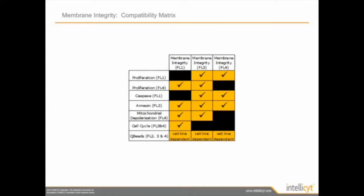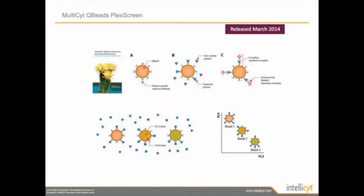You can also multiplex this dye with cell cycle and even with other Q-Beats. One of our most popular kits is the Q-Beats assay kit, which allows you to look at secreted cytokines. The beads are coated with a capture antibody that will capture the secreted protein. Then you come in with a fluorescently labeled detection antibody to measure how much protein has been captured. The beads are barcoded with varying concentration and ratio of FL1 and FL4, allowing you to create up to a 30-plex assay. We offer human, mouse, and rat panels. For more information, please visit our website at www.intellocyte.com.